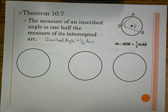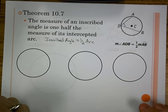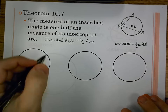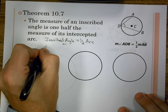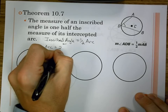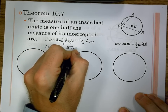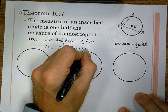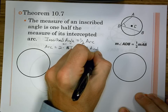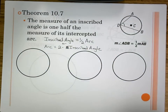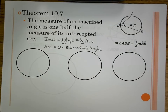That's our general rule for the inscribed angle. If you don't like the one half, you can move it over and say the arc is two times the inscribed angle. So the arc is twice the angle, or the angle is half the arc — that's the relationship between them.